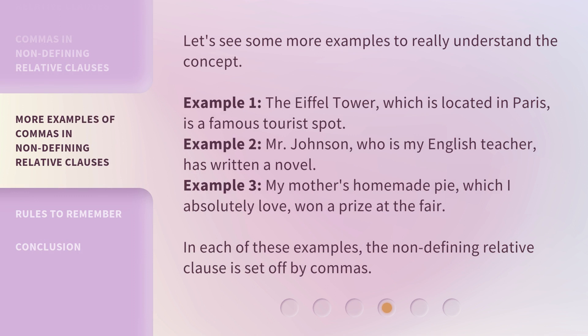Let's see some more examples to really understand the concept. Example 1: 'The Eiffel Tower, which is located in Paris, is a famous tourist spot.' Example 2: 'Mr. Johnson, who is my English teacher, has written a novel.' Example 3: 'My mother's homemade pie, which I absolutely love, won a prize at the fair.' In each of these examples, the non-defining relative clause is set off by commas.